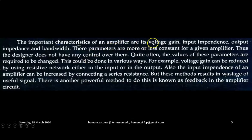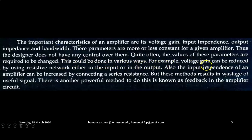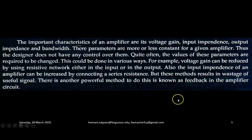The important characteristics of an amplifier are its voltage gain, input impedance, output impedance, and bandwidth. These parameters are more or less constant for a given amplifier, so the designer does not have any control over them. Quite often, the values of these parameters are required to be changed. This could be done in various ways. For example, voltage gain can be reduced by using a resistive network either in the input or in the output. Also, the input impedance of an amplifier can be increased by connecting a series resistance. But these methods result in a wastage of useful signal. So there is another powerful method to do this, which is known as feedback in the amplifier circuit.